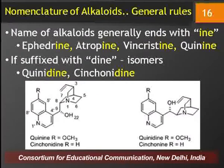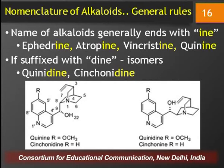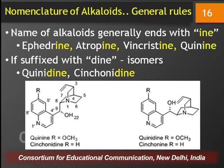Coming on to the nomenclature of the alkaloids — how these alkaloids or compounds are named. There are certain general rules. Number one: the names of alkaloids generally end with the suffix -ine. Examples are ephedrine, morphine, coniine, cinchonine, vincristine, vinblastine — you can see all these alkaloids end with -ine. This is one of the general rules of nomenclature of alkaloids.